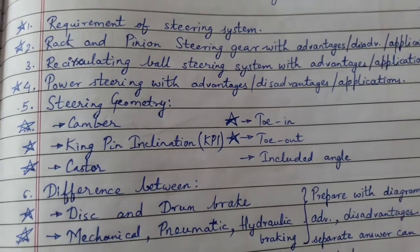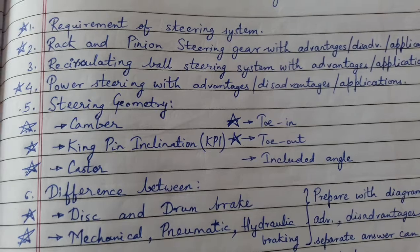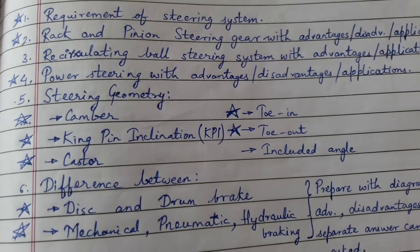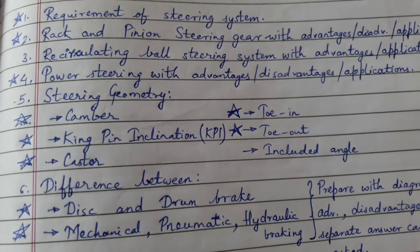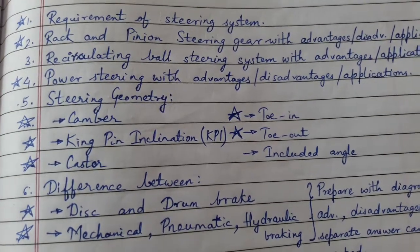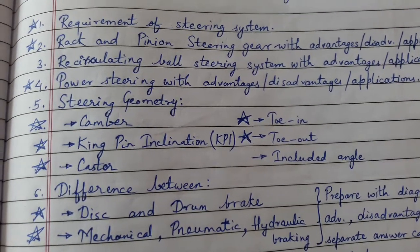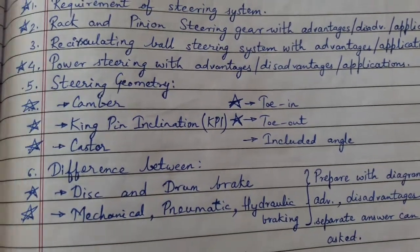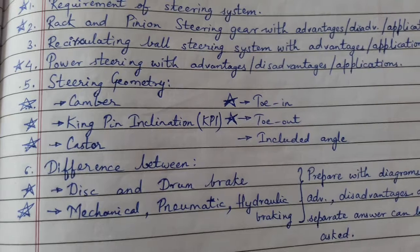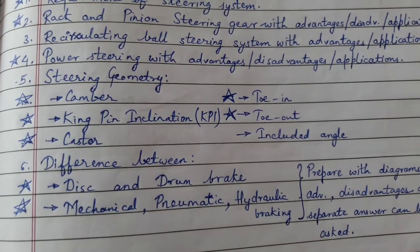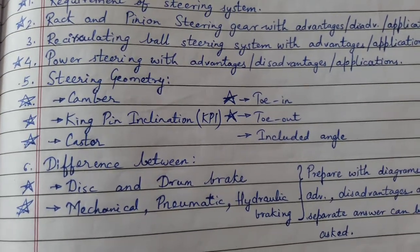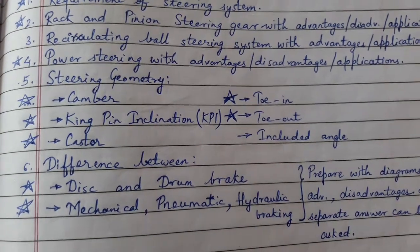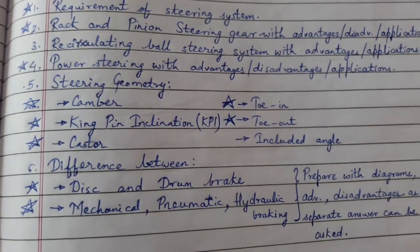Also covered: steering geometry — camber, kingpin inclination (KPI), caster, toe-in, toe-out, and included angle — as well as the difference between disc and drum brakes, and mechanical, pneumatic, and hydraulic braking systems. Differences between mechanical and pneumatic, or pneumatic and hydraulic, may also be asked.